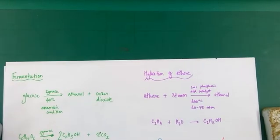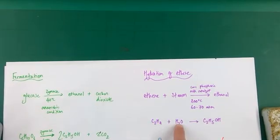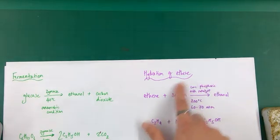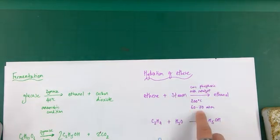Here is the balanced equation for that. Ethene plus steam, H₂O gaseous, in the presence of these conditions, 300 degrees, 60 to 70 atmospheres, and a concentrated phosphoric acid catalyst, will form pure ethanol C₂H₅OH.